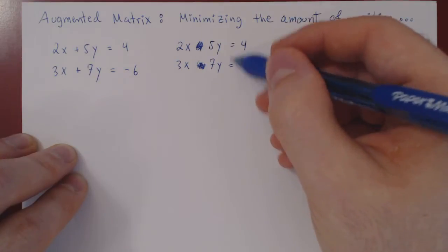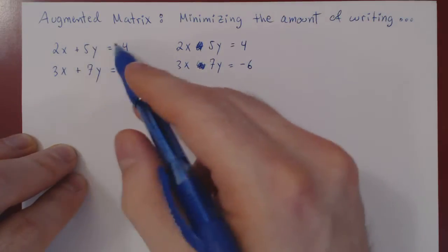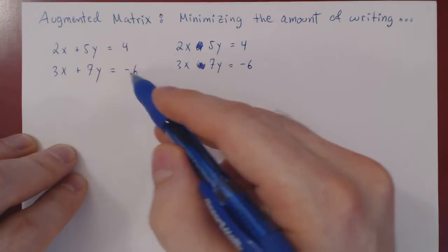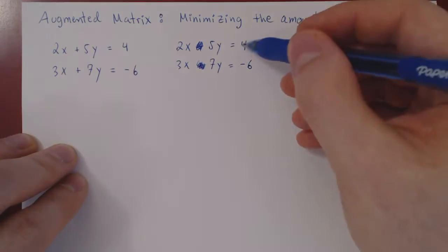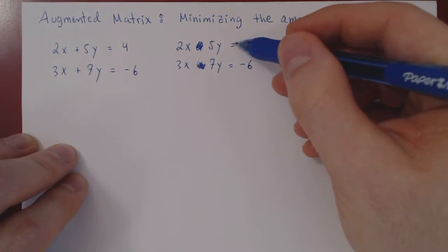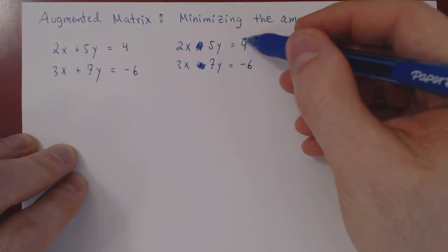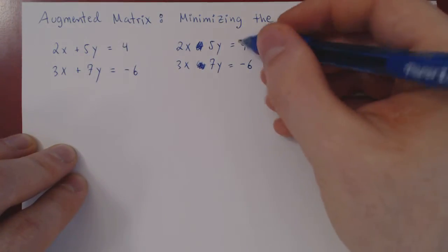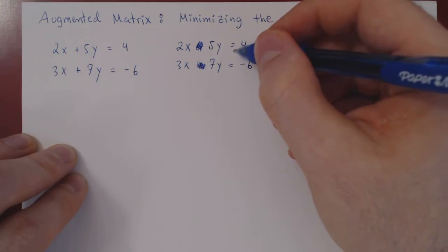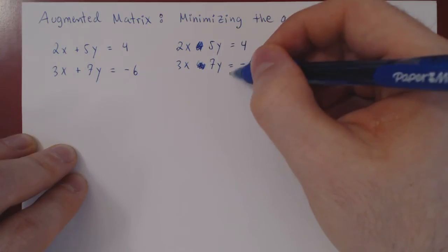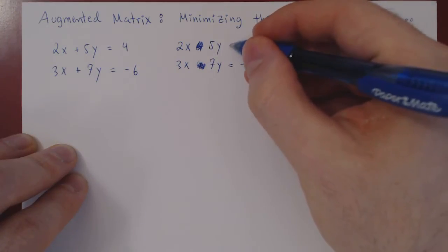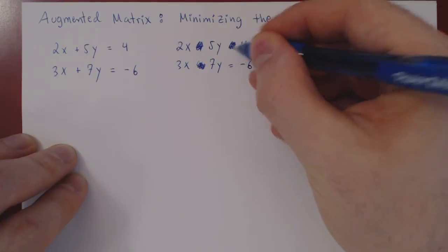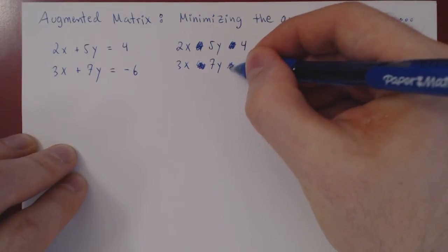We always end the linear equation with an equal sign followed by a constant. So we know that right before the constant term there is always an equal sign. Well, if it's always an equal sign, we don't need to write it — we can scratch it off.